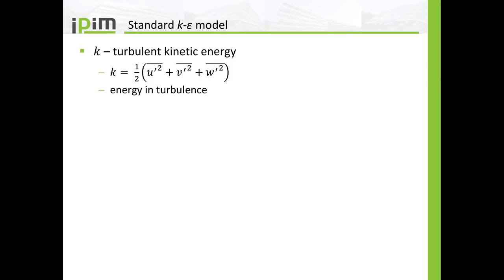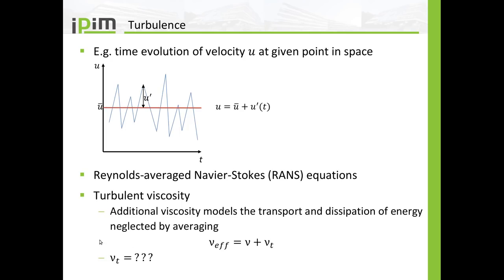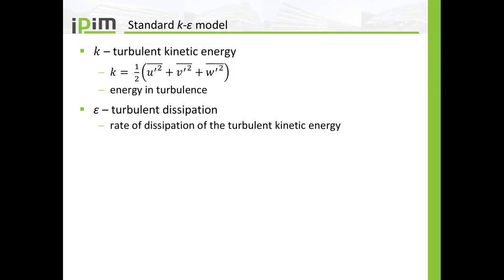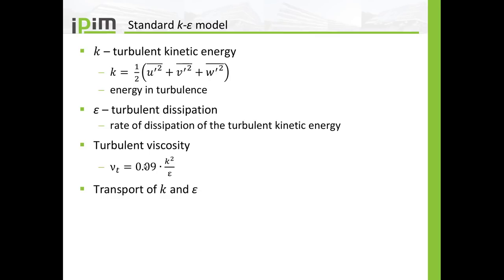I will show you this for the k-epsilon model here because I'm going to use this model in the simulation. In order to calculate the turbulent viscosity, you introduce two additional quantities besides p and U: one is k, the turbulent kinetic energy, and the second is epsilon, the turbulent dissipation. You calculate the turbulent viscosity with a constant value of 0.09, multiplied by k-squared divided by epsilon. Importantly, you have an additional transport equation for k and one transport equation for epsilon.